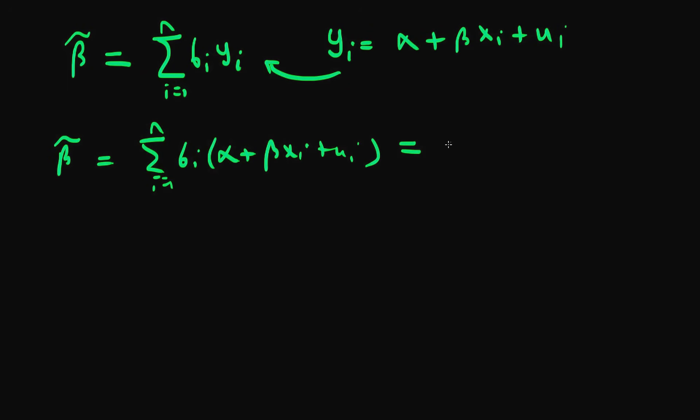And then I can write this out in terms of the individual terms as being alpha times the sum of i equals 1 to n of bi, because alpha doesn't have any sort of index of summation, plus beta times the sum of i equals 1 to n of bi xi, plus finally the sum of i equals 1 to n of our bi times ui.